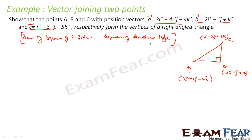That will be the approach we follow. To prove a triangle is a right triangle, the best way is to prove that the Pythagoras theorem holds. Another way is to prove that the angle between two lines is 90 degrees, but we have not learned that yet — we will learn it in the next chapter. So we will use the magnitudes of vectors AB, BC, and CA and apply Pythagoras theorem.